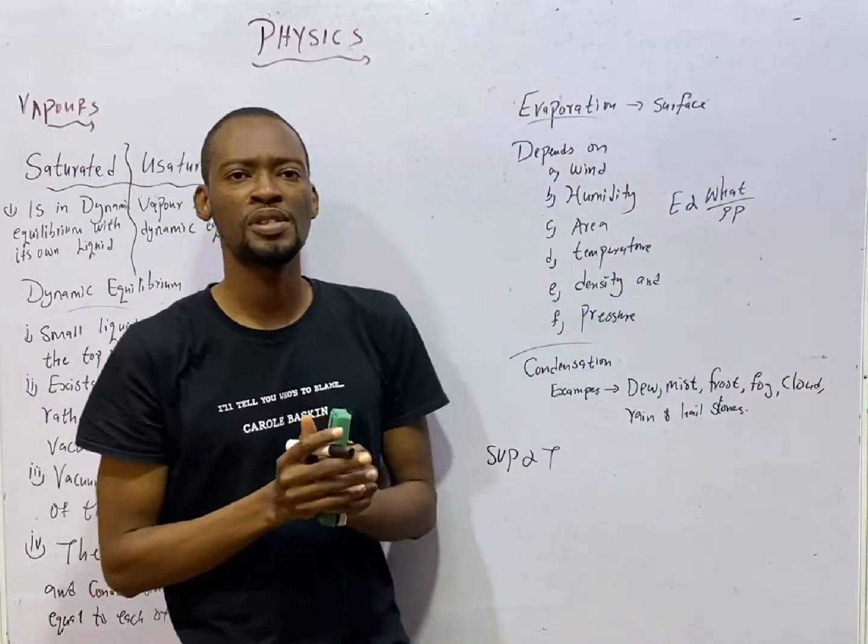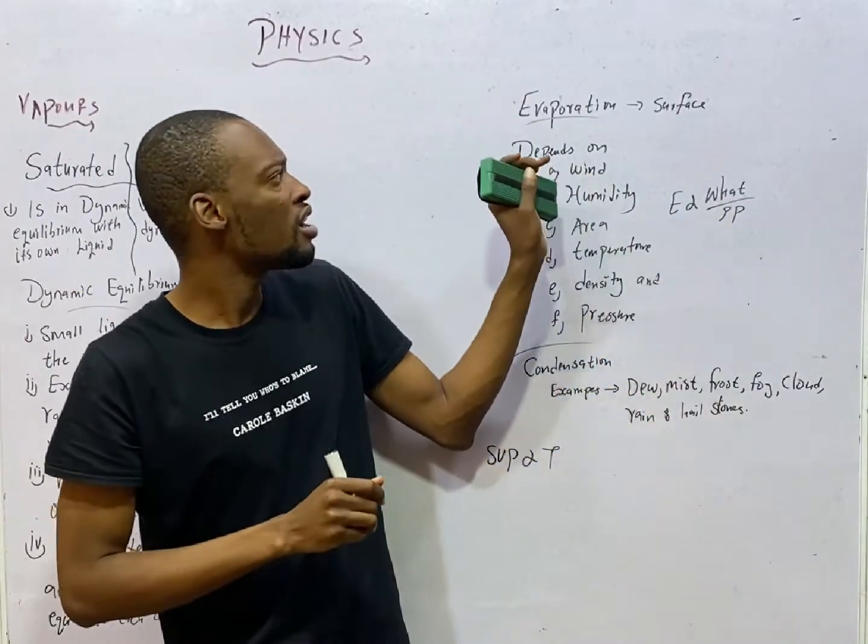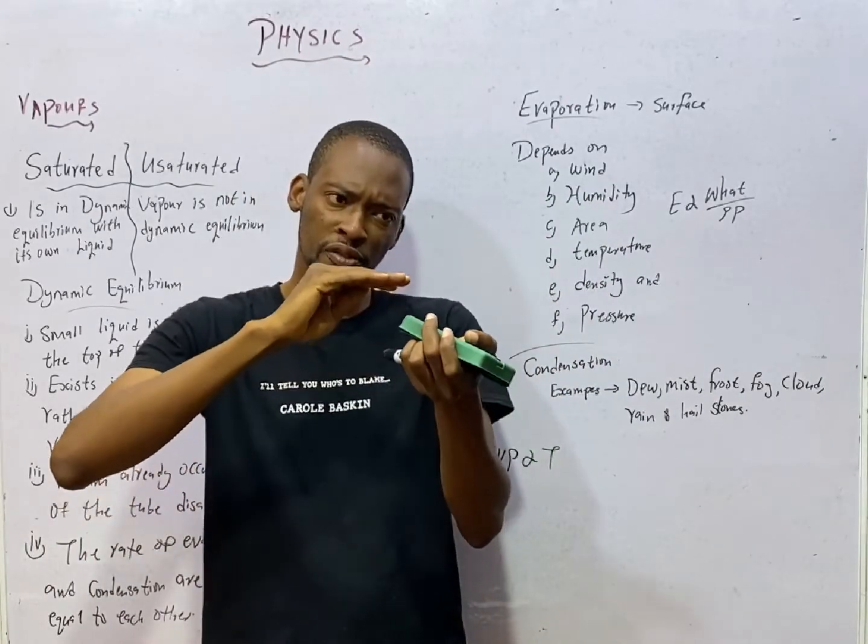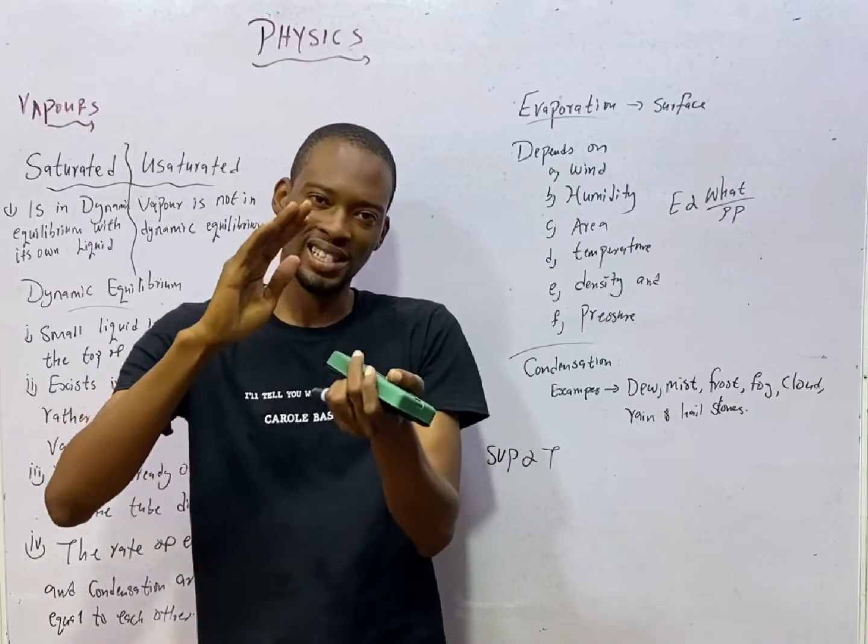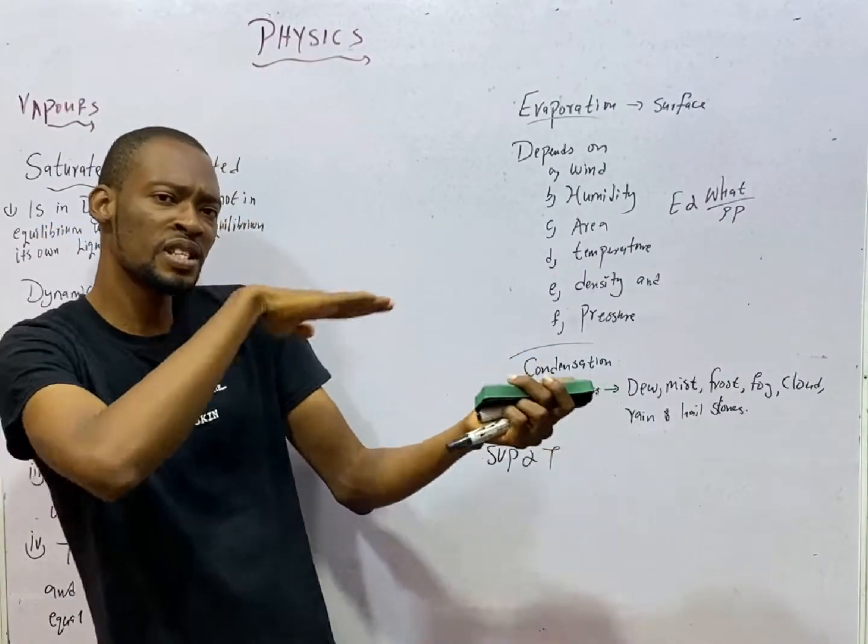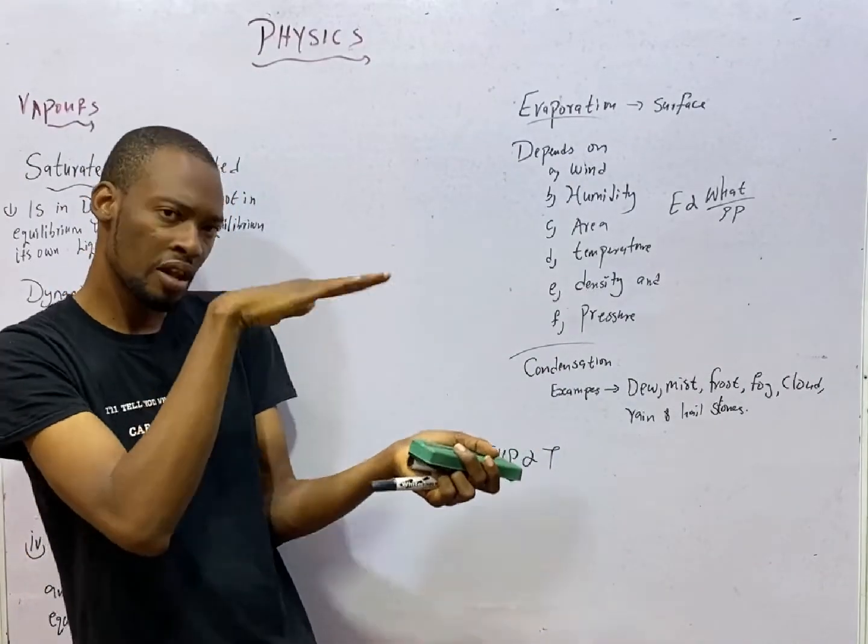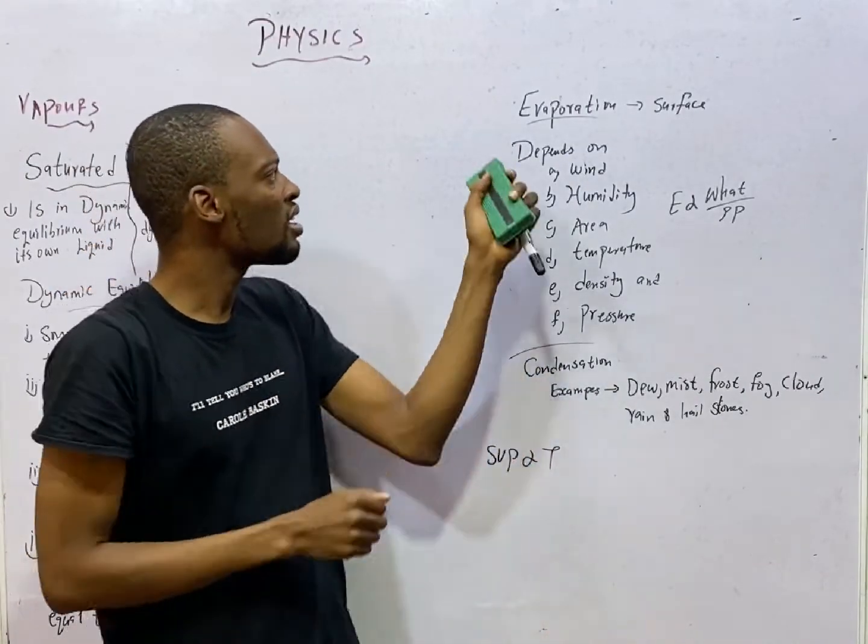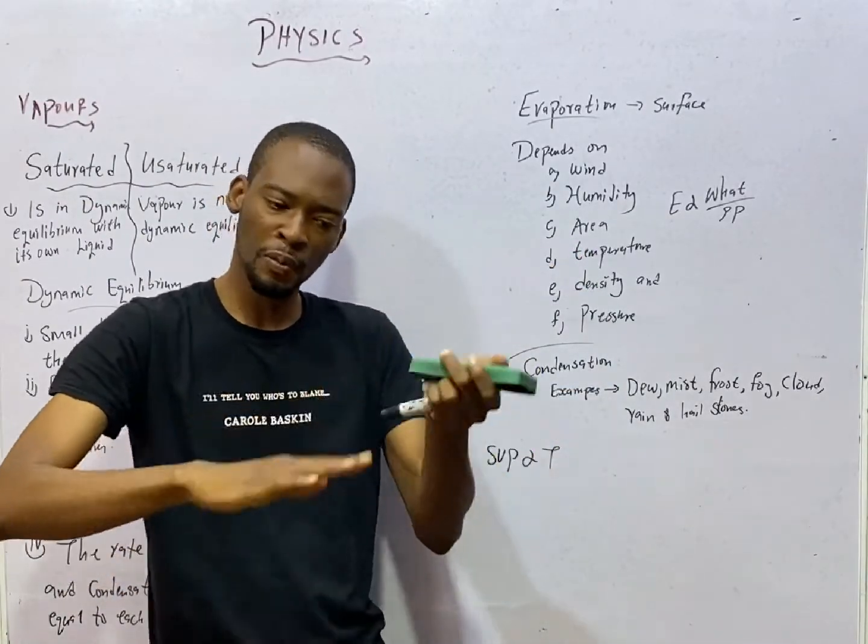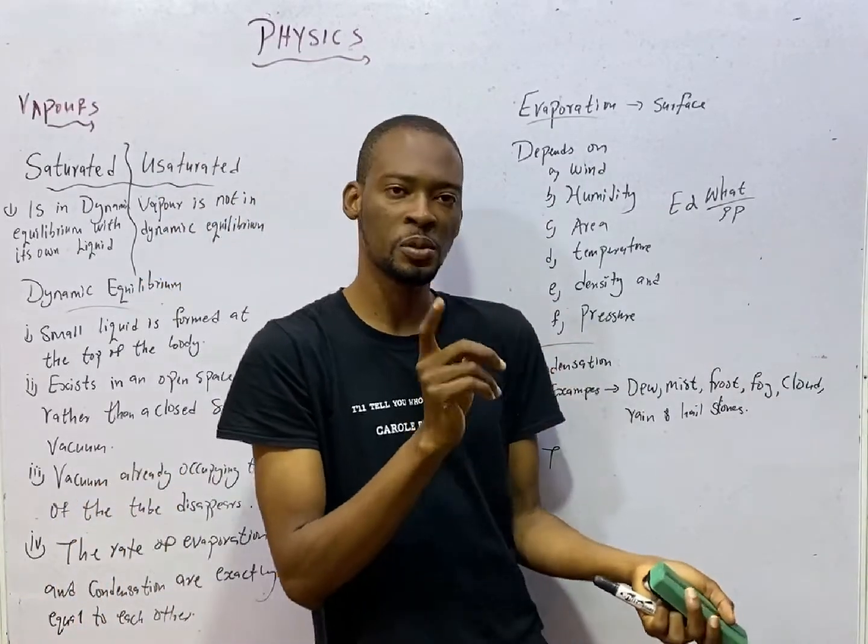Another concept you should understand when it comes to vapors is evaporation. Evaporation is simply change of liquid to gases at the surface. Evaporation is a surface phenomenon. It does not happen all over the liquid but only at the surface. This is why evaporation can occur in any temperature, cold, hot, evaporation can always happen. But boiling is not a surface phenomenon. Boiling happens all over the liquid.